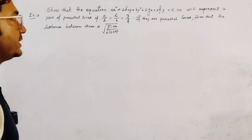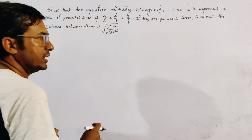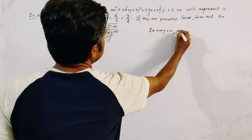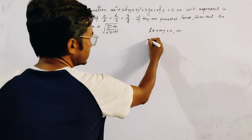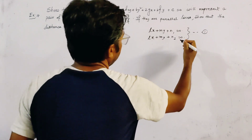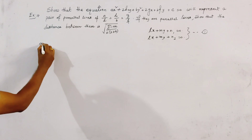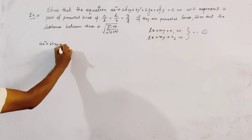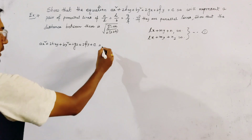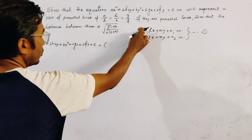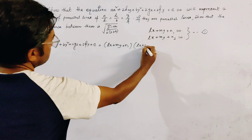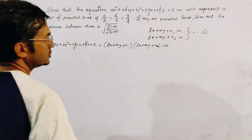Let the given equation represent two parallel lines. The lines are of the form: one line is Lx + My + N1 = 0, and the other line is Lx + My + N2 = 0, because these are parallel lines. We can write Ax² + 2Hxy + By² + 2Gx + 2Fy + C equal to the product of these two lines, that is (Lx + My + N1)(Lx + My + N2).